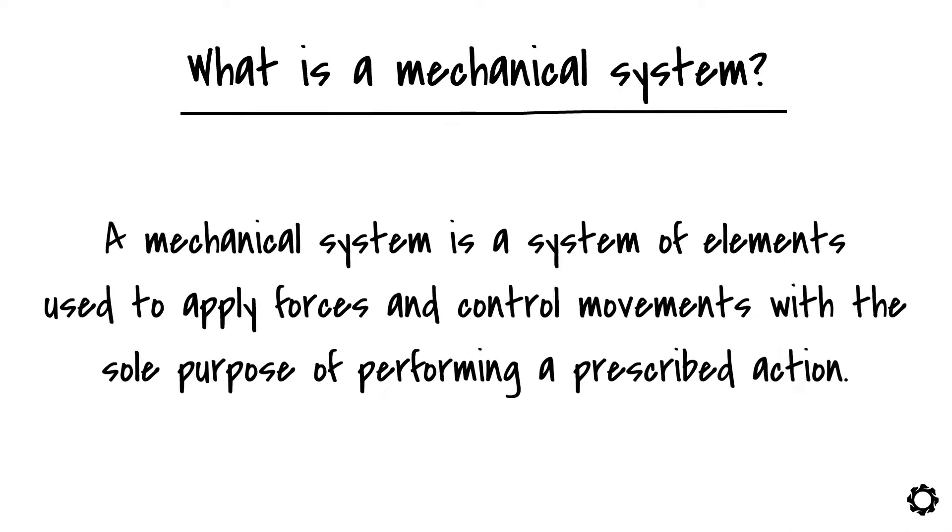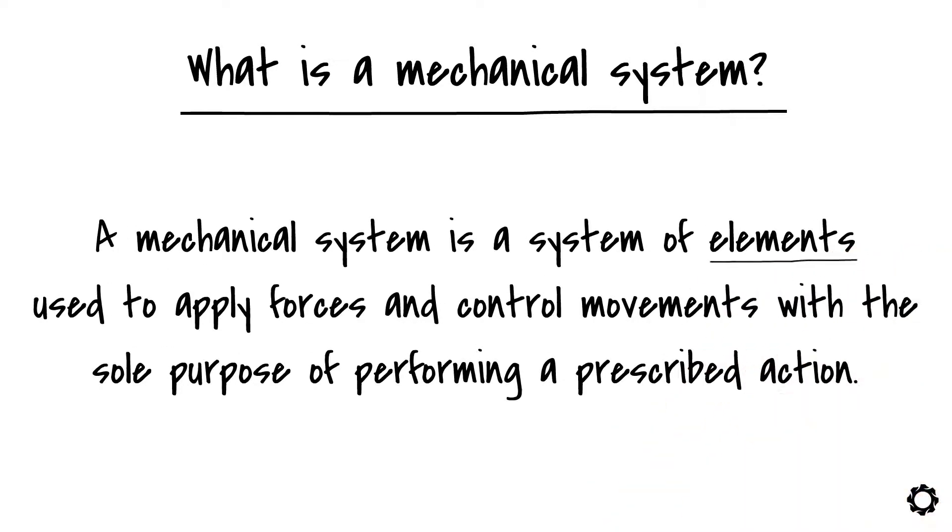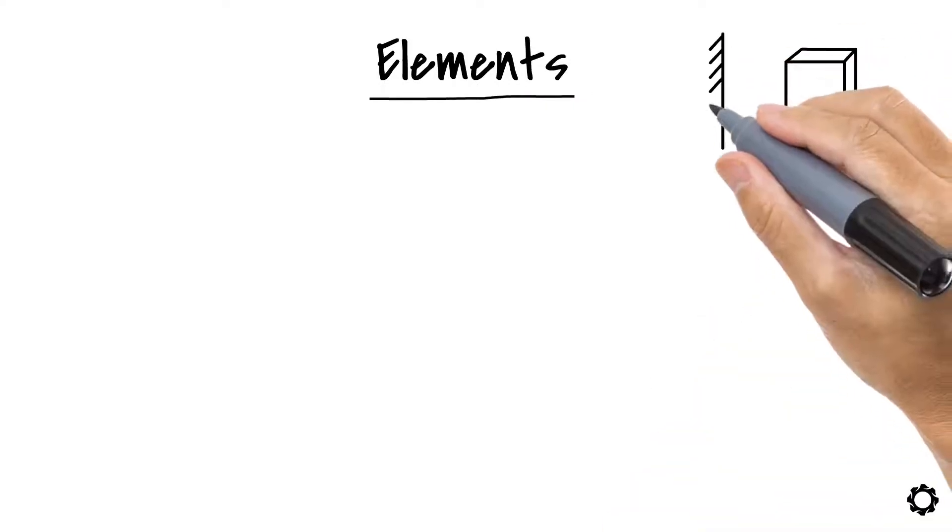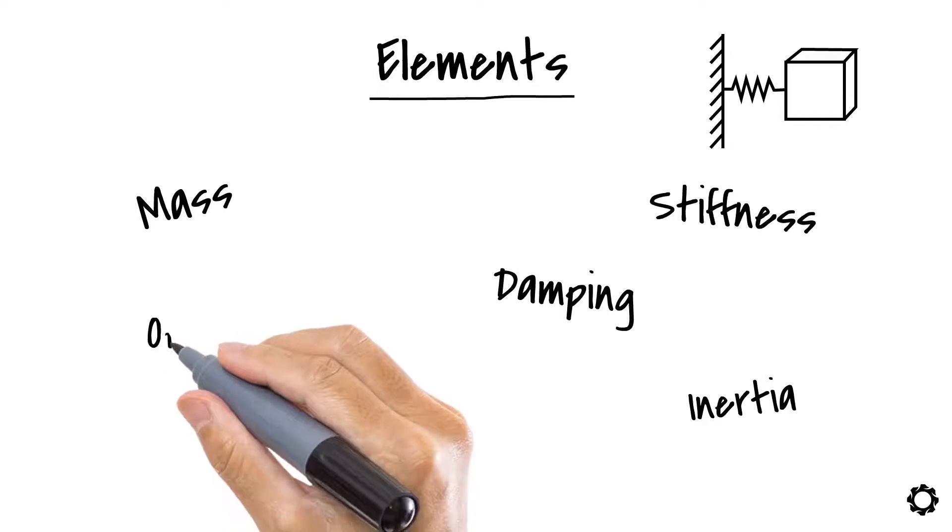In the concept we rapidly see terms such as elements, forces and movement. Elements as in components, structures, parts. If we assume that these are solid elements we know that these elements or parts can be defined in terms of their mass, stiffness, damping and inertia which implicitly tells about the geometry of the part and other material properties.